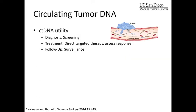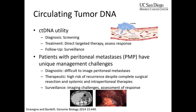The utility of circulating tumor DNA includes implications for screening — potentially detecting ctDNA before patients are diagnosed — directing therapy, assessing response, and surveillance. This is really what got us interested. PMP is a difficult disease not just to treat, but also to diagnose and to survey. Diagnostically, it's difficult to image peritoneal metastases. A patient may have some fluid visible, but when you do a laparoscopy, you see tumor nodules on the diaphragm that you just don't see on the scan. Sometimes the scan looks totally normal and it's not.